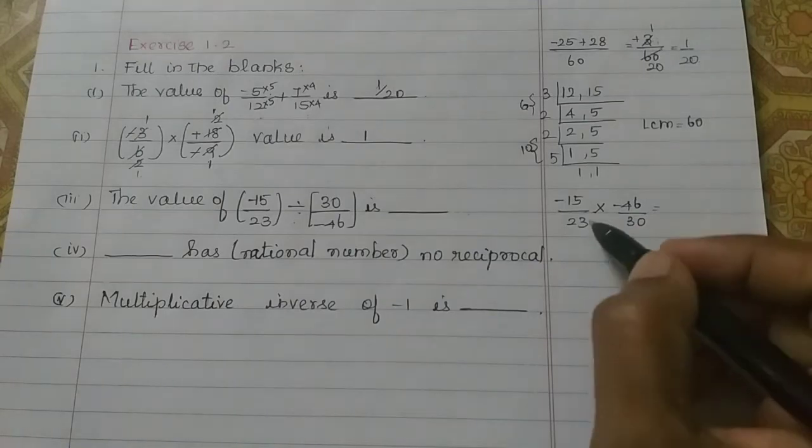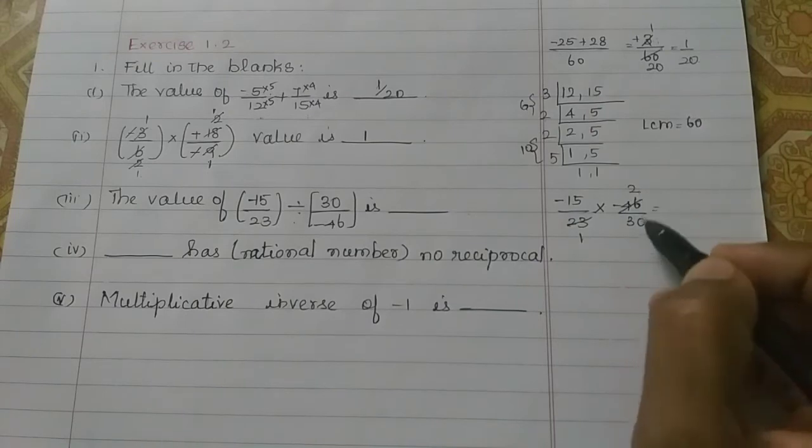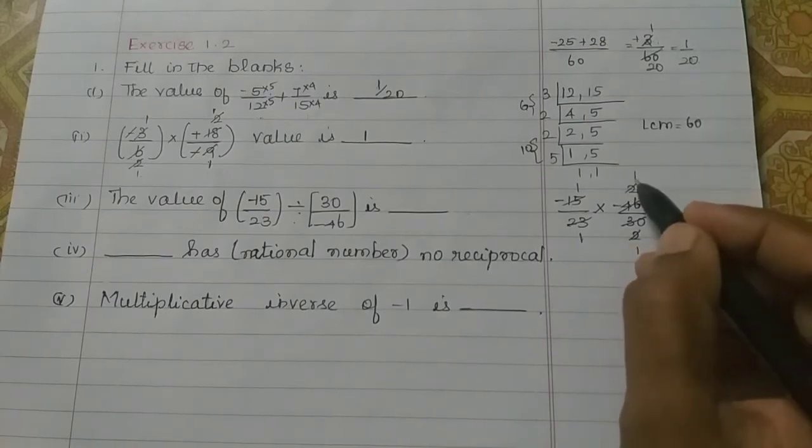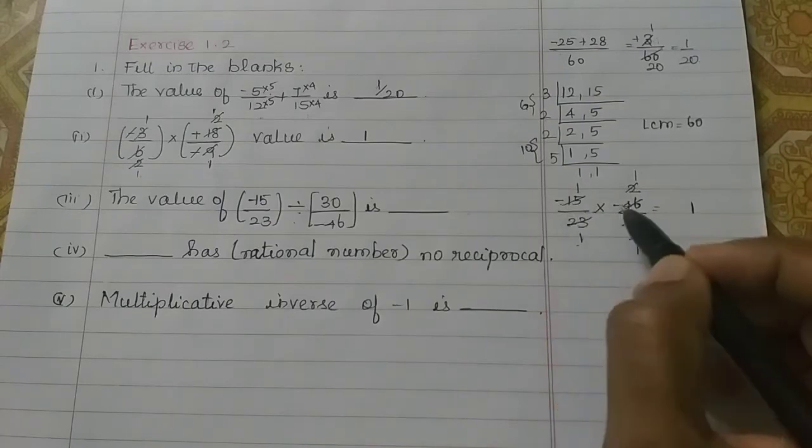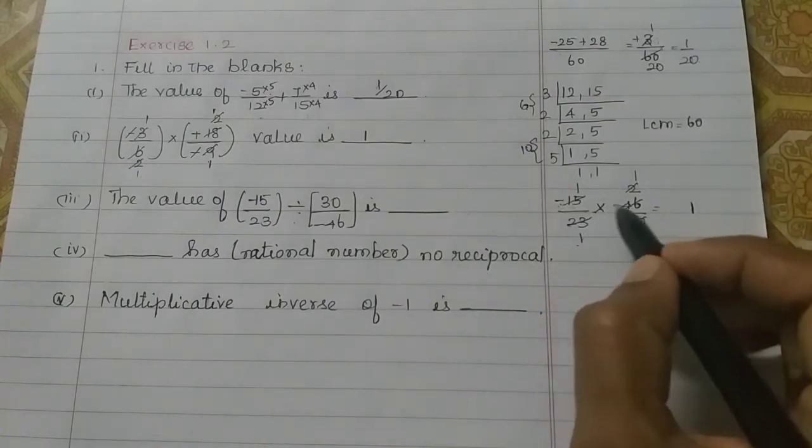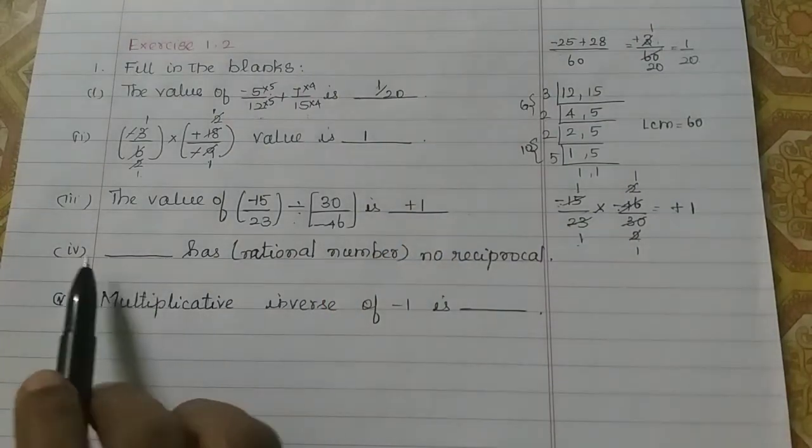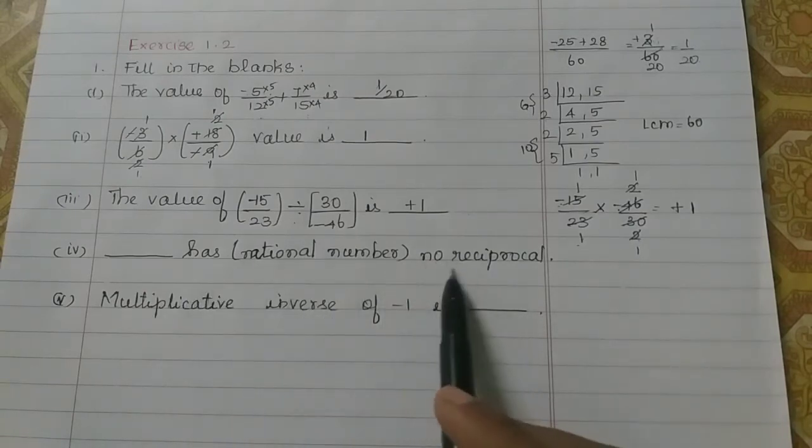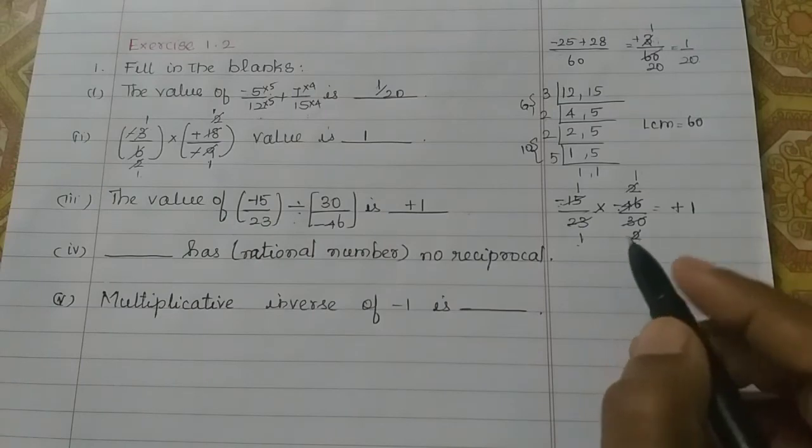So, now, 23 one times and 23 two times in the 46. Then, 15 one times and 15 twos are 30. Then, 2 ones are 2, 2 ones are 2. So, the answer is plus 1. The answer is plus 1.